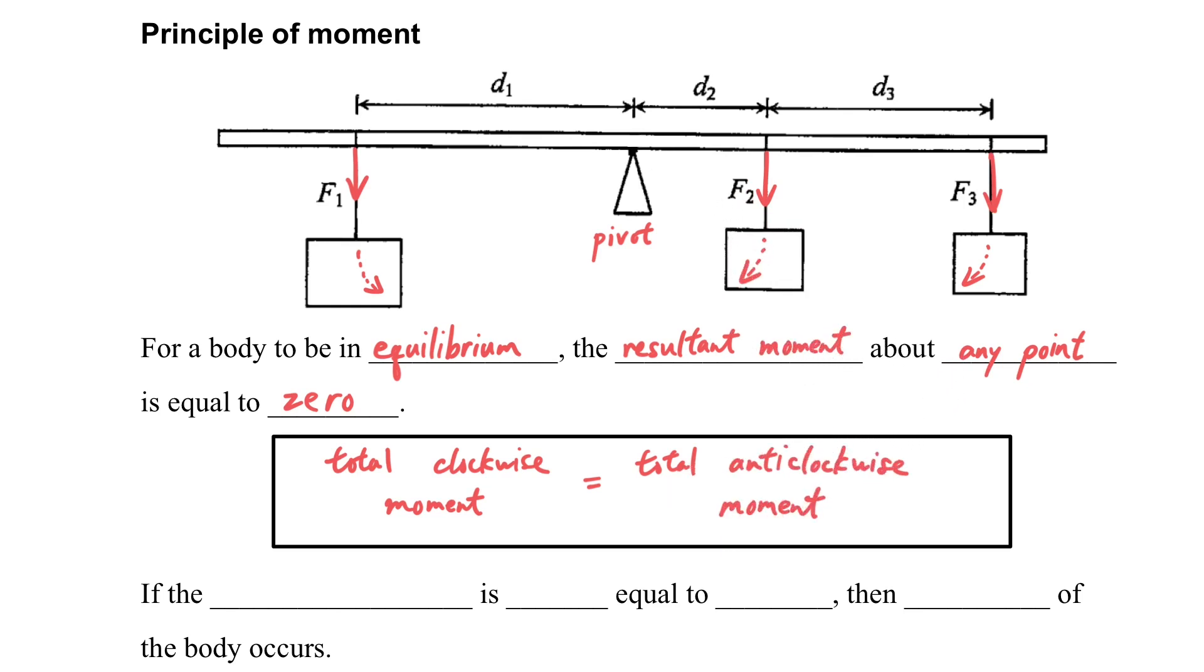So in this case, if it is in equilibrium, or it is at rest, so that the clockwise moment F2 times d2 plus F3 times d3 will be equal to the anticlockwise moment.